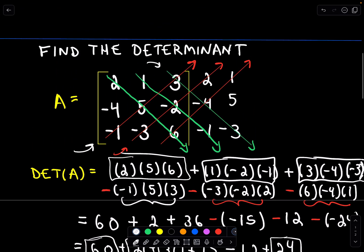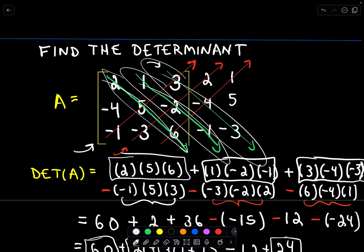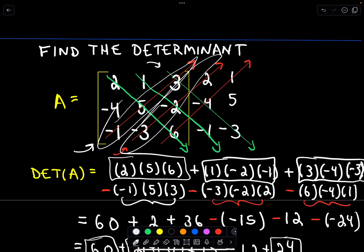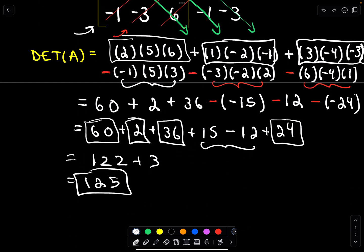So again, the main idea, just multiply the down arrows, add those together, multiply the up arrows, and just subtract those values away. And that's going to give you the value of your determinant.